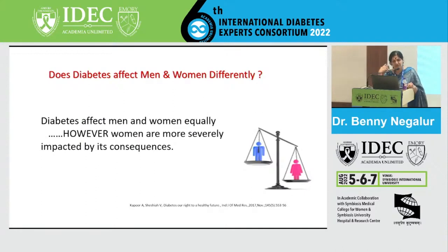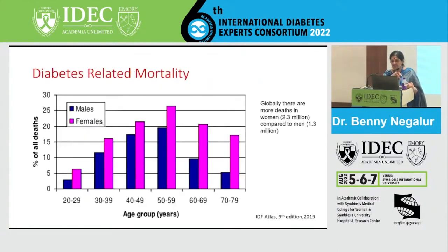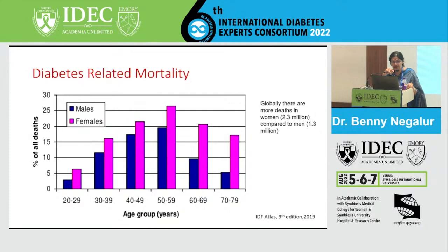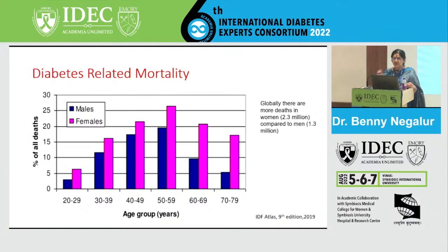Diabetes affects men and women equally, but women are most severely impacted by its consequences. The bars show that diabetes-related mortality is much higher in women compared to men globally — 2.3 million deaths in women versus 1.3 million in men. The purple bars go much higher when women reach menopause, almost five times more than men.